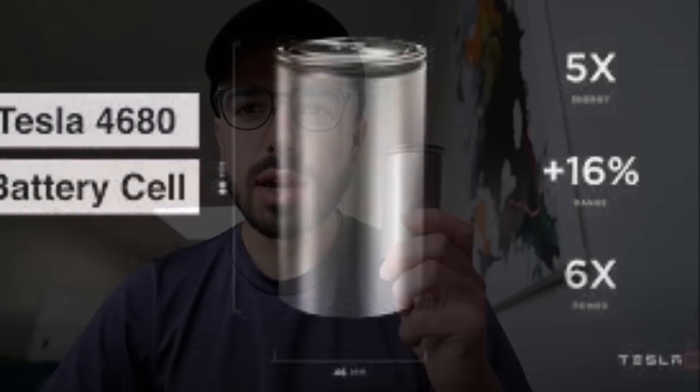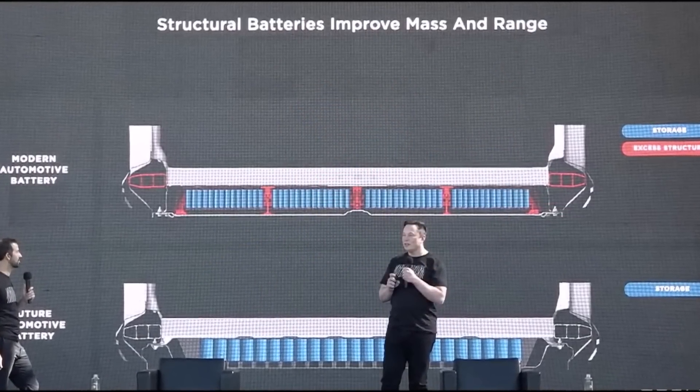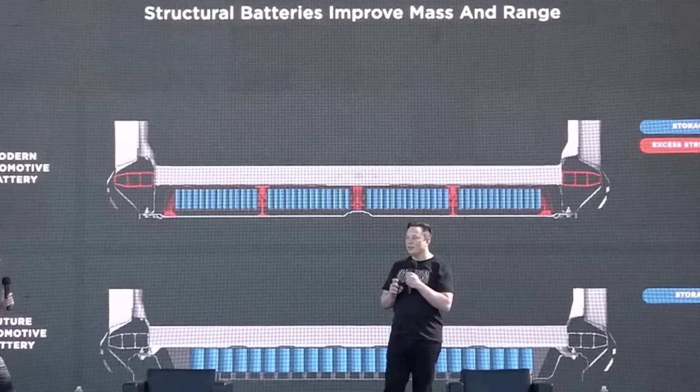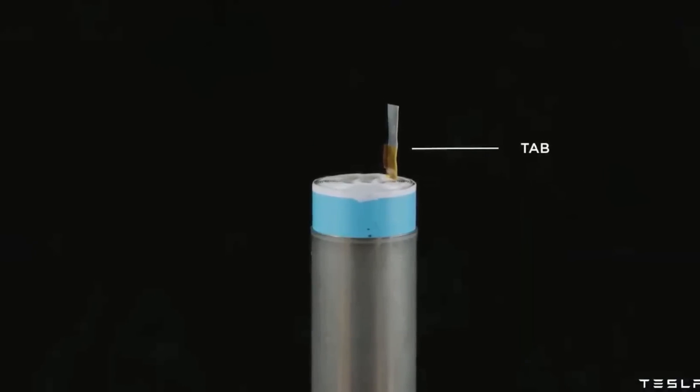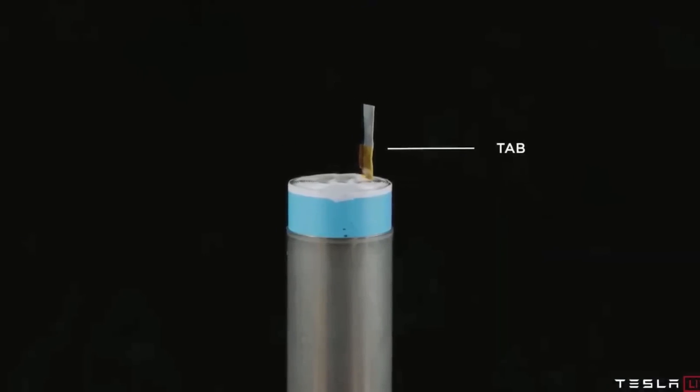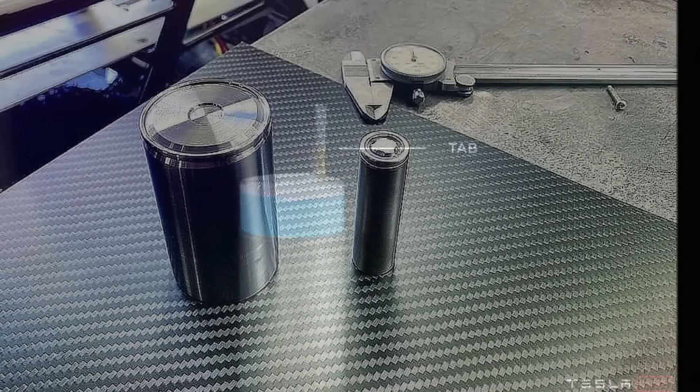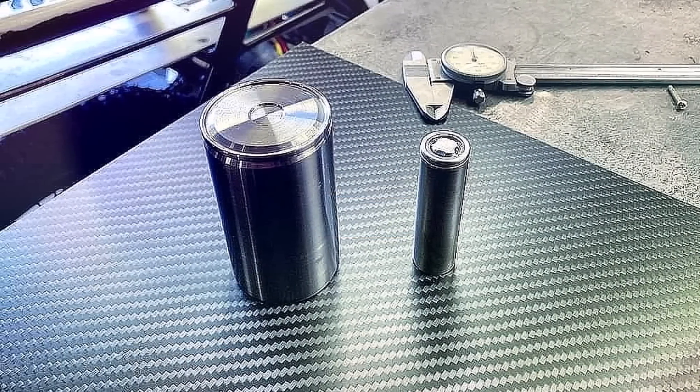Thankfully, the company has already initiated some contingencies that address the 4680 cell delays. The production of the Model Y in Giga Berlin and Giga Texas, as I reported a few days ago, would be launched with 2170 battery packs, at least until the 4680 cells are available. I will have the Hyperchange feature on Tesla's 4680 battery production challenges in the description of this video.